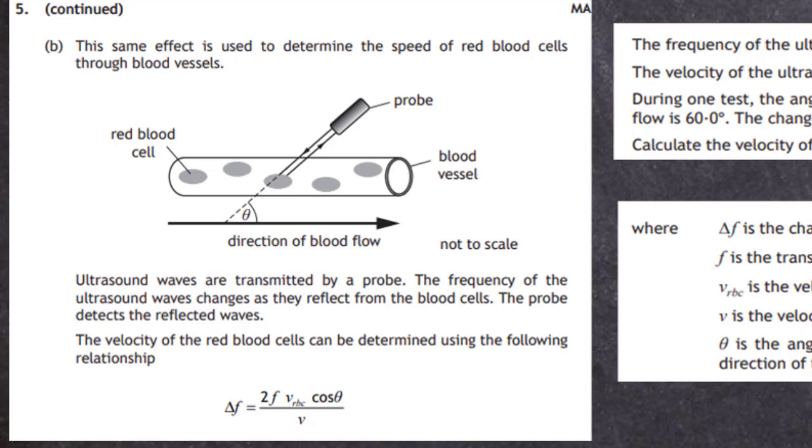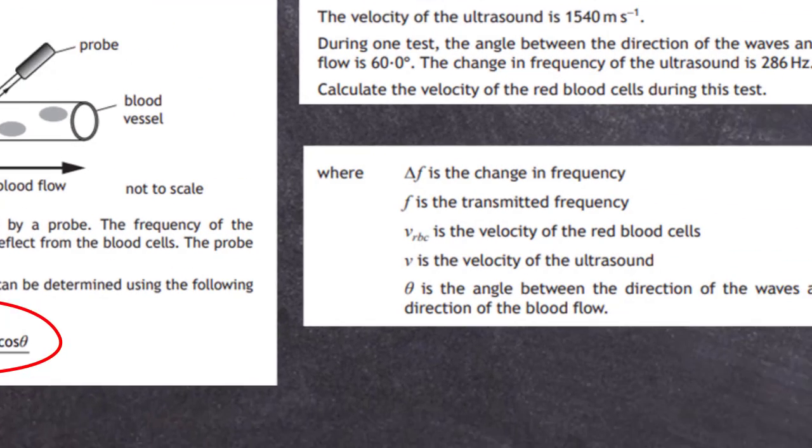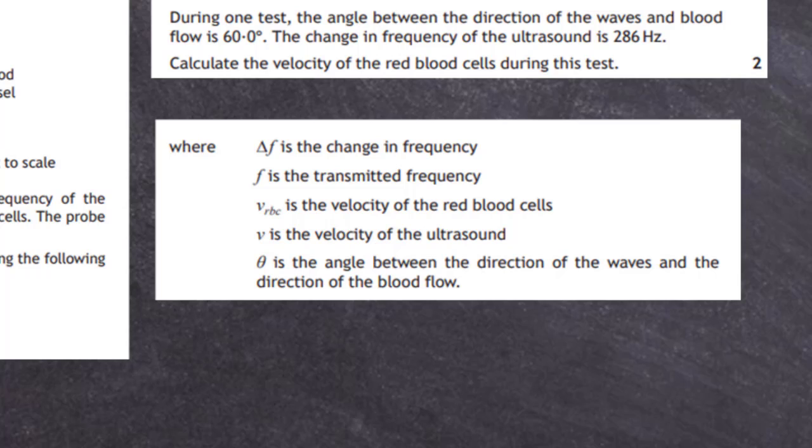The velocity of the red blood cells can be determined using this relationship. You're given that big equation. Luckily you're told what all these things mean. Delta F is the change in frequency. F is the transmitted frequency. V_RBC is the velocity of the red blood cells, that's what we're after. V is the velocity of the ultrasound. Theta is the angle between the direction of the waves and the blood flow.